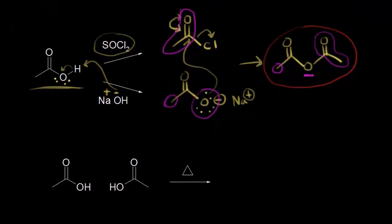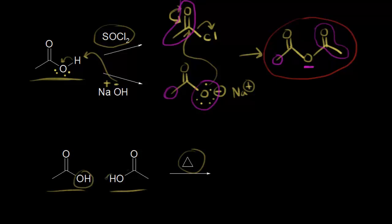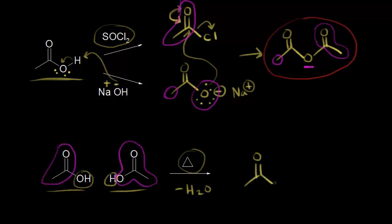Let's look at another way to form acetic anhydride. You could start with two carboxylic acids — acetic acid and acetic acid, the same carboxylic acid — and apply high heat. This time you think about a dehydration reaction: losing an OH from one and a hydrogen from the other to form water. You stick those portions of the molecule together to get acetic anhydride. This way of doing it is not always the best way — it works for acetic acid, but it doesn't work for most carboxylic acids.